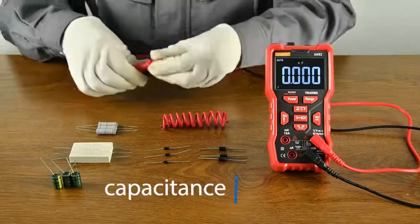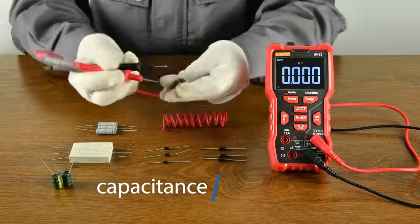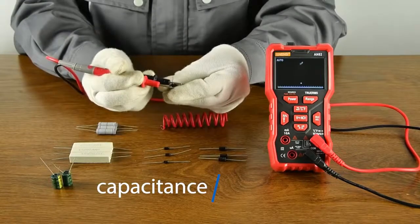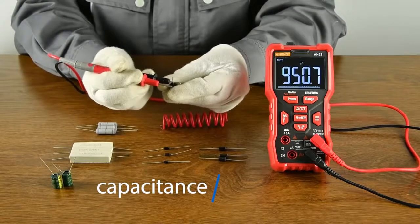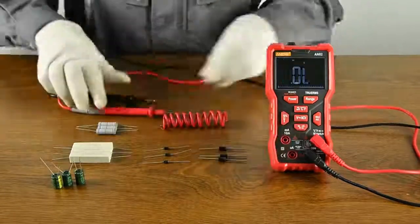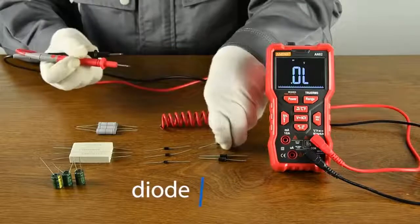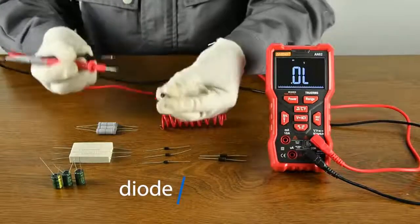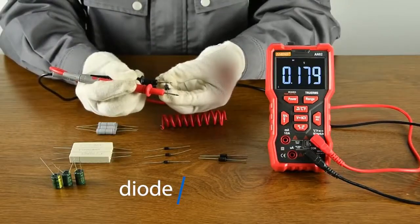Capacitance measurement. Discharge before measurement. Switching function. Diode measurement. Positive and negative colors need to be aligned.